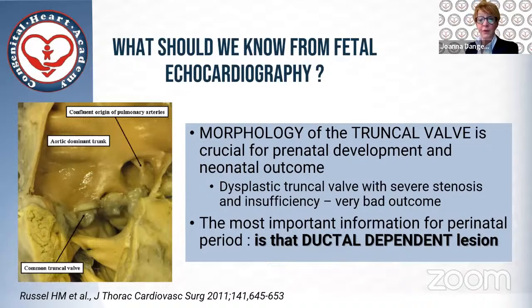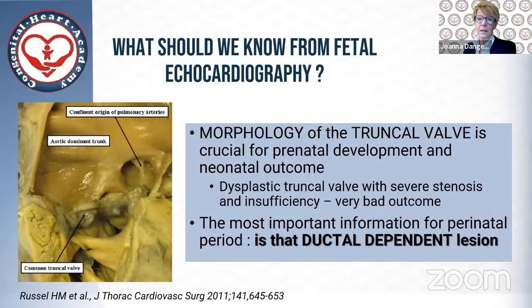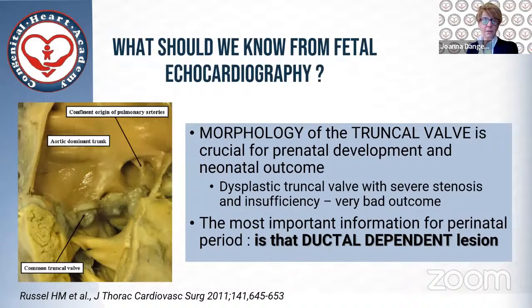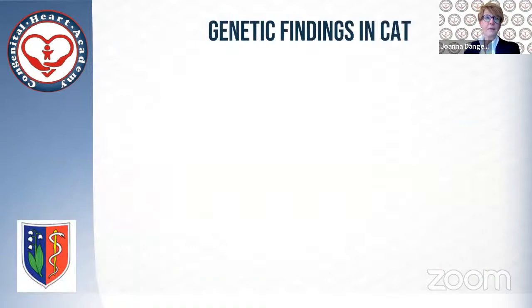What should we know from fetal echocardiography to make the best counseling? First, of course, we should know the kind of truncus, but then the crucial thing is the morphology of the truncal valve, because it is crucial for development and neonatal outcome — a dysplastic truncal valve which leads to stenosis and especially insufficiency, according to my knowledge, has a very, very bad outcome. The most very important situation is to know if it is ductus-dependent, which will be the case if we have an interrupted aortic arch. Then, of course, genetics is very important.